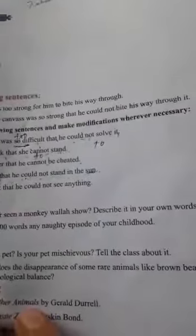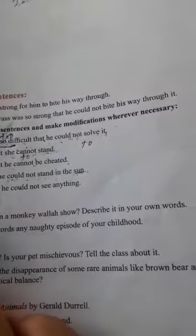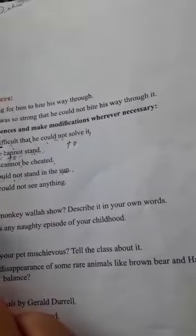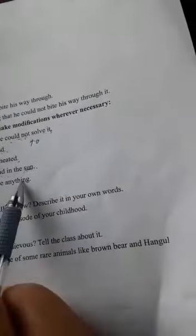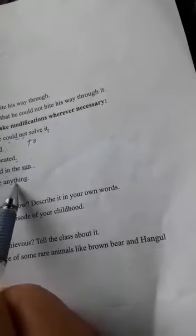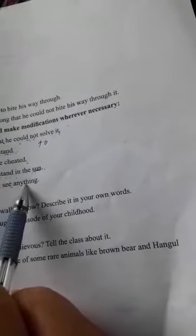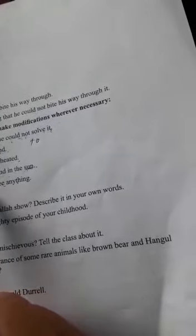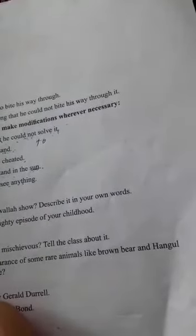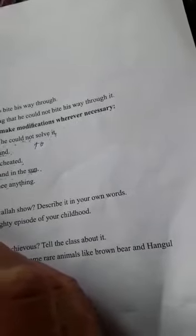Question number 5, اس کا sentence ہے: It was so dark that he could not see anything. یہ اتنا اندھیرا تھا کہ کوئی بھی چیز وہ دیکھ نہیں سکتا تھا۔ It was too dark for him.